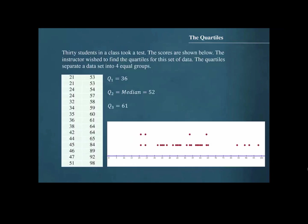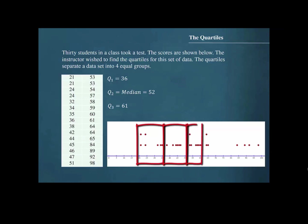Here is a dot plot for the data. The bottom 25% of the data extends from the minimum value of 21 up to the first quartile of 36. The next 25% extends from 36 up to the second quartile of 52. The next 25% extends from 52 to the third quartile of 61. And the upper 25% extends from 61 up to the maximum value of 98. Although these intervals vary in width, it is important to note that each contains the same number of data values.